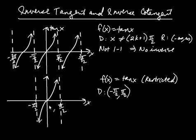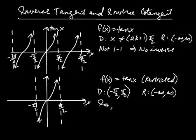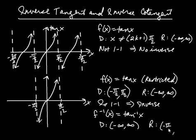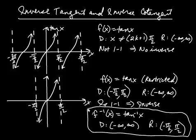This restricted function is one-to-one — it passes the horizontal line test, so it has an inverse. The range is still negative infinity to infinity. So we can write down that this function is one-to-one, and that implies it has an inverse. F inverse is inverse tangent. The domain of this function is negative infinity to infinity, and the range is from negative pi over 2 to positive pi over 2. The most important thing is that the output is an angle in this interval.